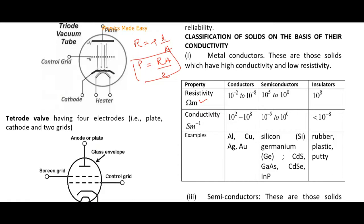For insulators, resistivity is greater than 10⁵ ohm·meter. The inverse of resistivity is conductivity, represented by σ. For conductors, conductivity is 10² to 10⁸; for semiconductors, it is 10⁻⁵ to 10⁰; and for insulators, conductivity is less than 10⁻⁸. Note that resistivity has negative powers for conductors while conductivity has positive powers.